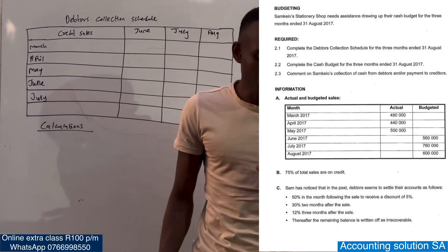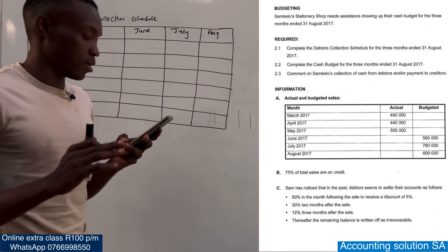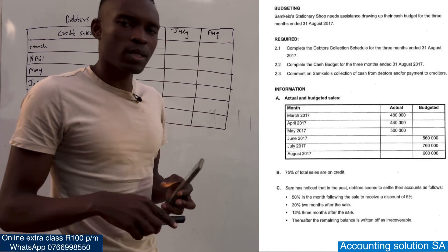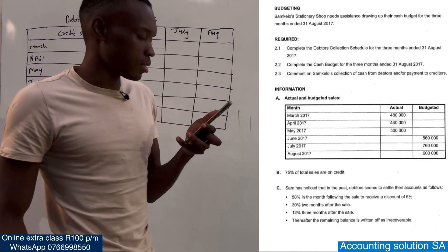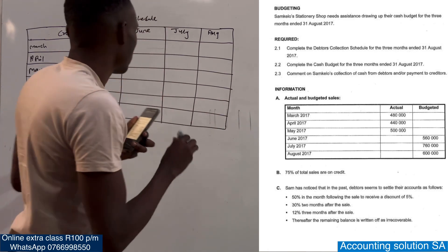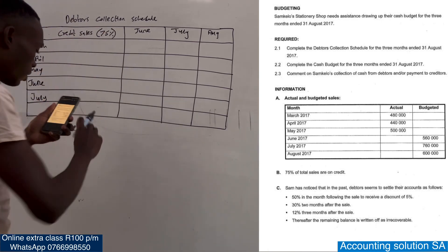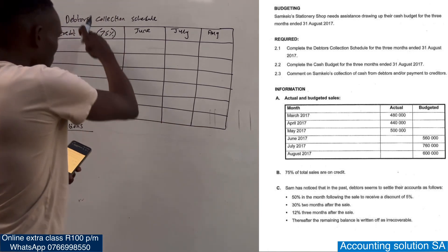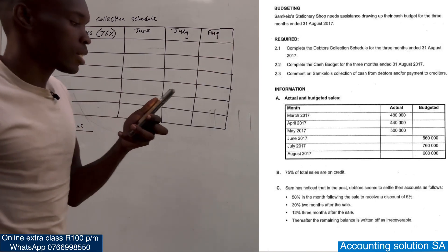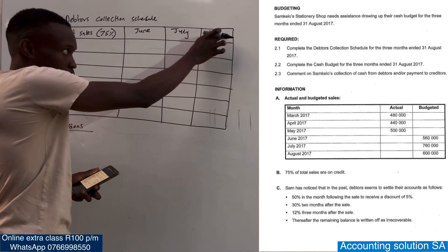Information number one is actual and budgeted sales. They give us March up to August with total sales. Remember, here we include only credit sales. Reading the information: point B says 75% of total sales are credit, which means 75% are credit sales which we have to record. We can now convert all those amounts. On this side we put all months that were given, and on this side we put the months that are required — three months ending August, which means three months going back from the last one of August.